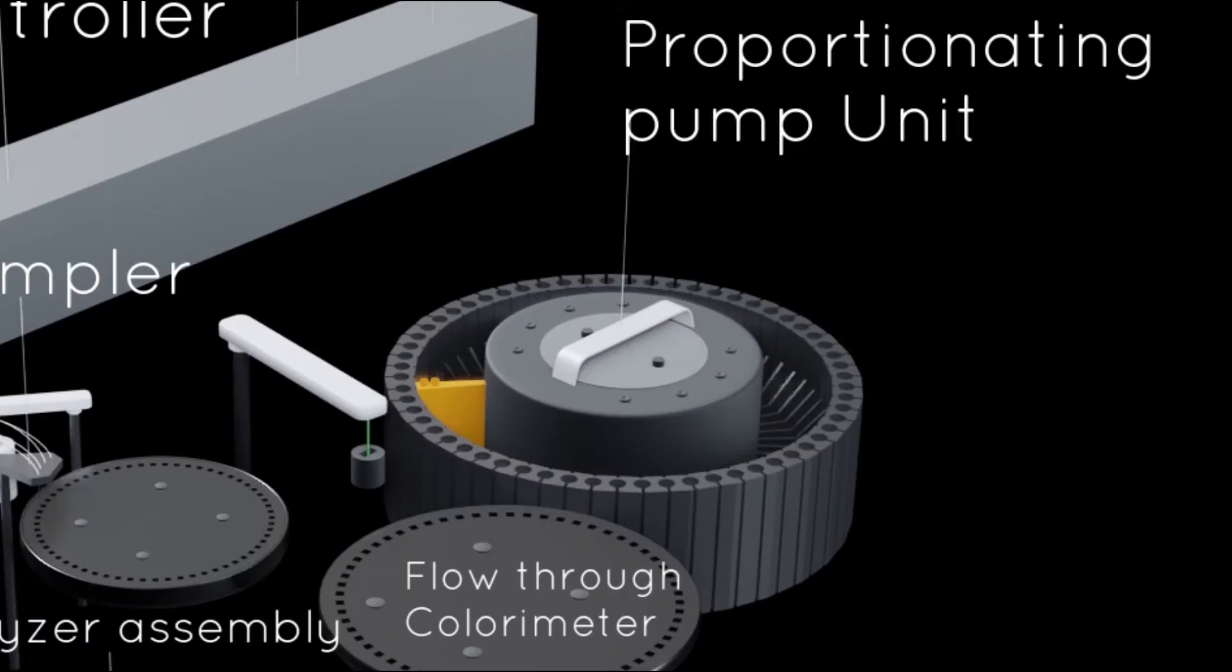The next component is the proportionating pump unit. This module determines the relative flow rates of sample and all reagents and replaces the use of different sizes of pipettes and manual methods.